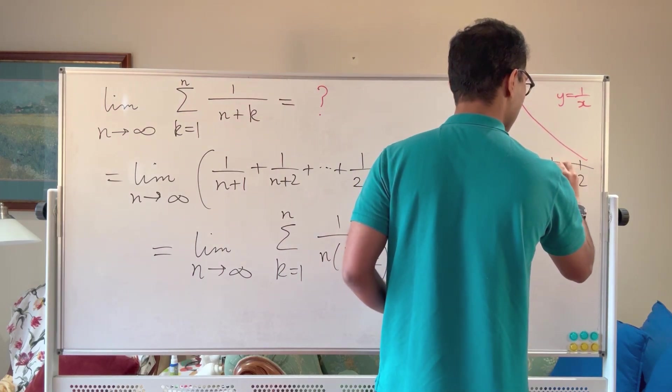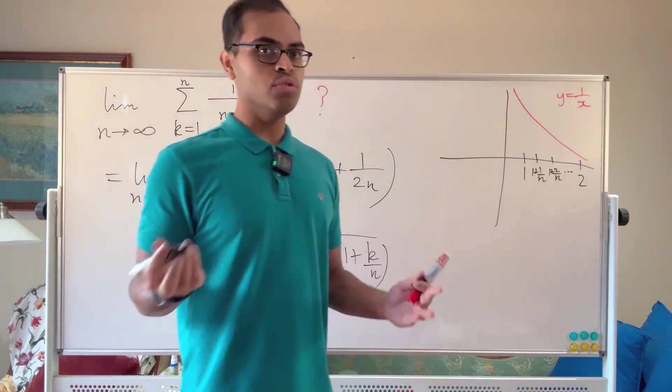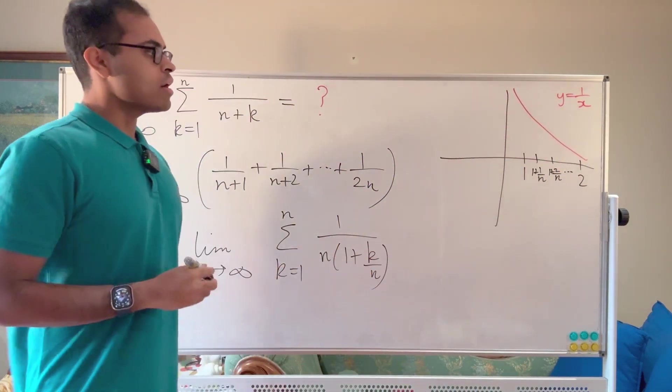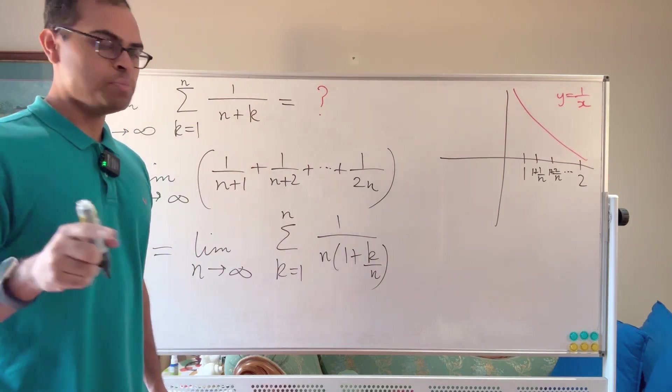1 plus 1 over n, 1 plus 2 over n, all the way up to 1 plus n over n, which is just 2 because n over n is 1. And now look at the y coordinates at each of these points.